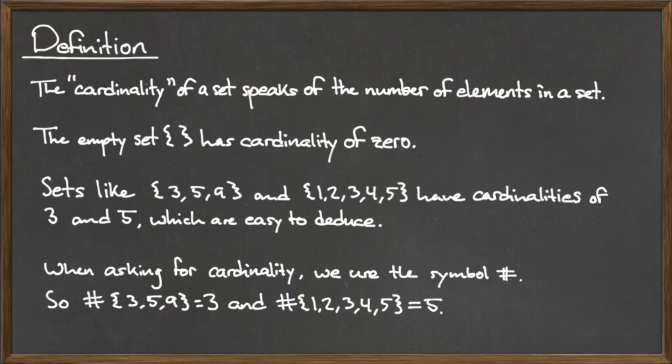which would be read as the cardinality of the set containing the elements 3, 5, and 9 equals 3, and the cardinality of the set containing the elements 1, 2, 3, 4, and 5 is equal to 5.